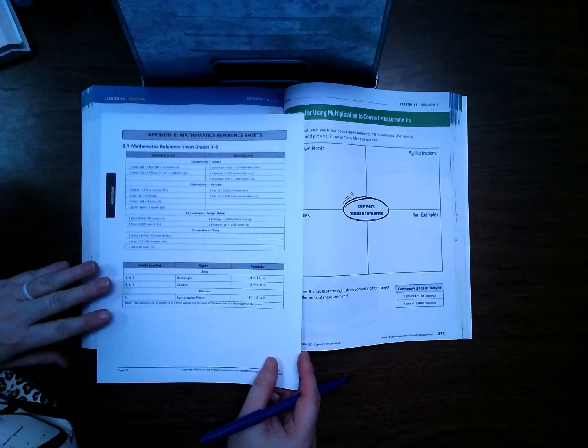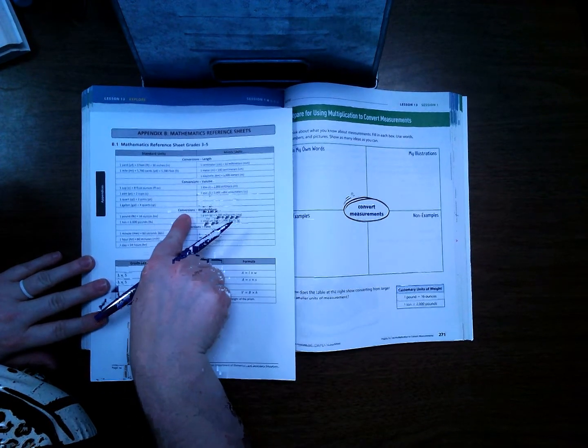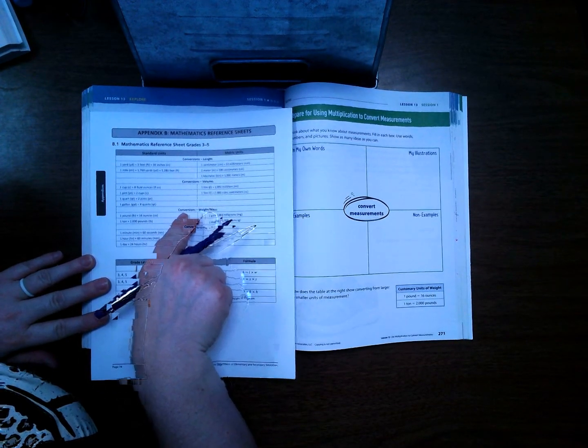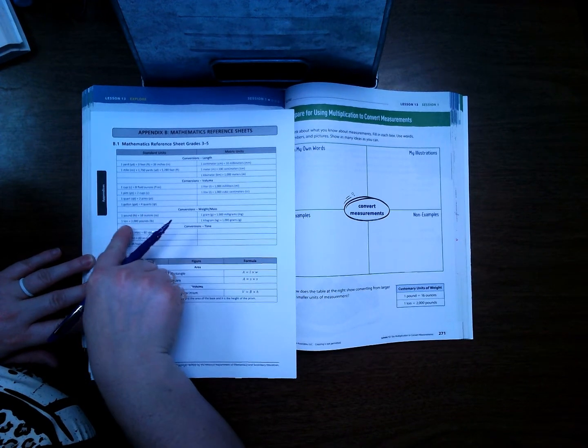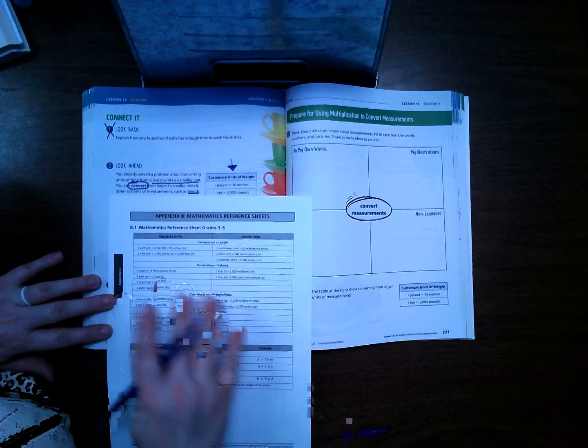You can also find this measurement on here, so you're going to find that under conversions weight, one pound is 16 ounces, one ton is 2,000 pounds. Same thing as right here, but again we're getting into the habit of using this.